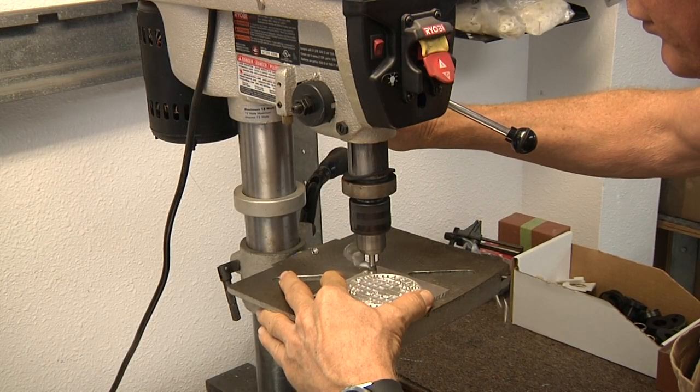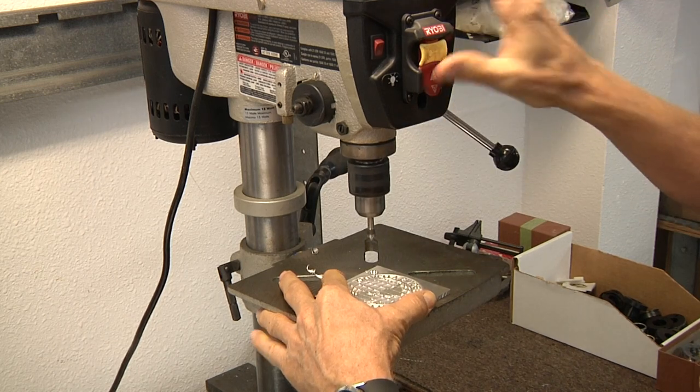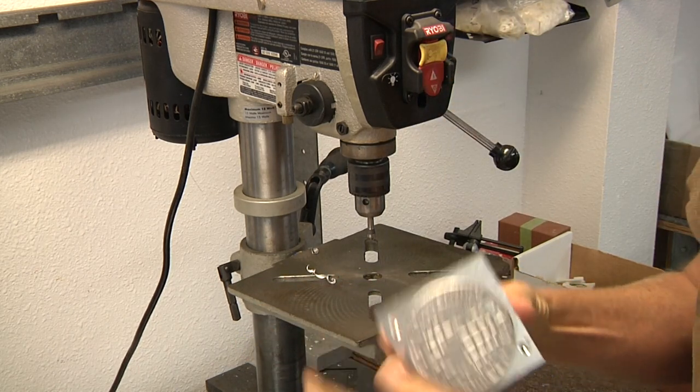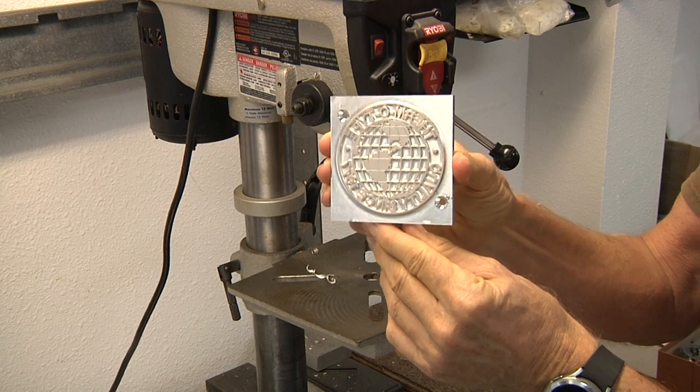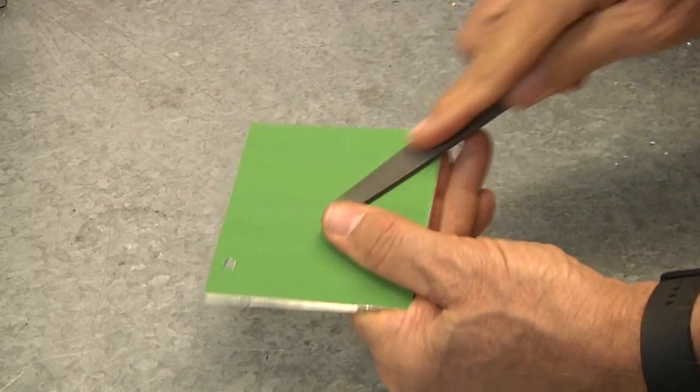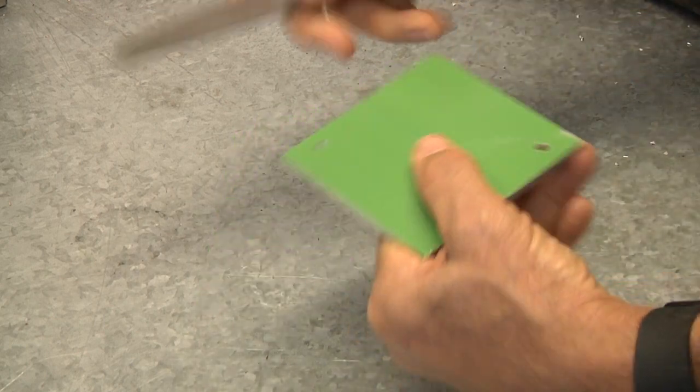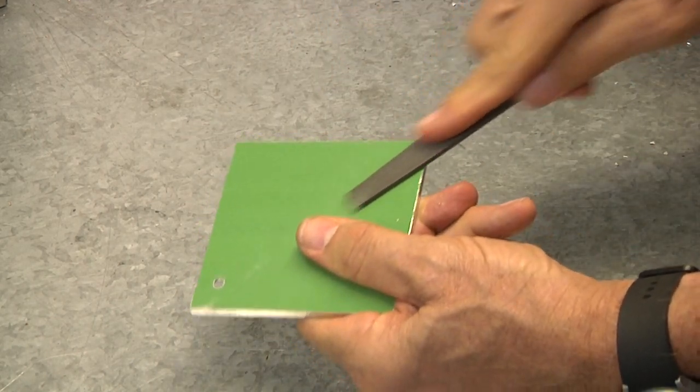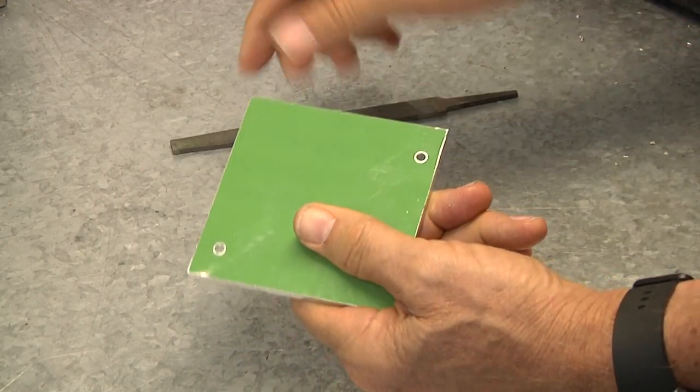After the holes have been drilled, each hole is countersunk for a 1032 flathead screw. The final operation is to use a small flat file to clear away any metal from around the hole on the backside of the die.